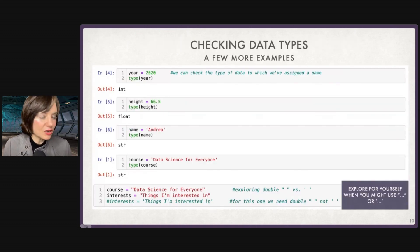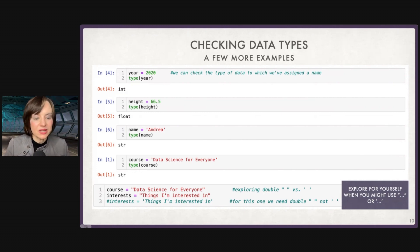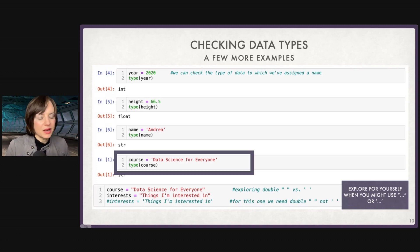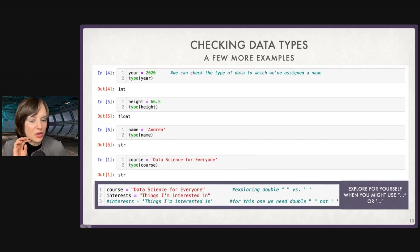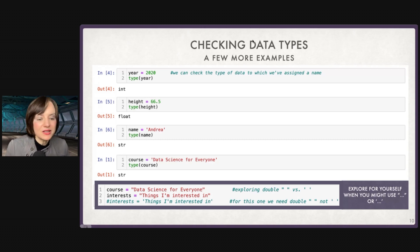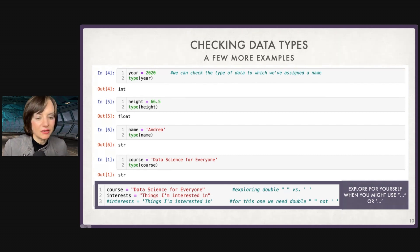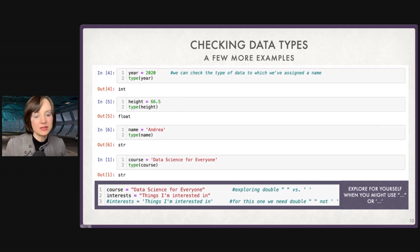I can use my naming skills and say course = 'Data Science for Everyone' and save it as an object. So now I can call up course and get the value it contains. Feel free to explore single quotes versus double quotes. I like single because I find them cleaner, but in a case with an apostrophe like 'I'm interested in things', you cannot use a single quote because it will end the string there. So you need to use double quotes if your string contains an apostrophe.